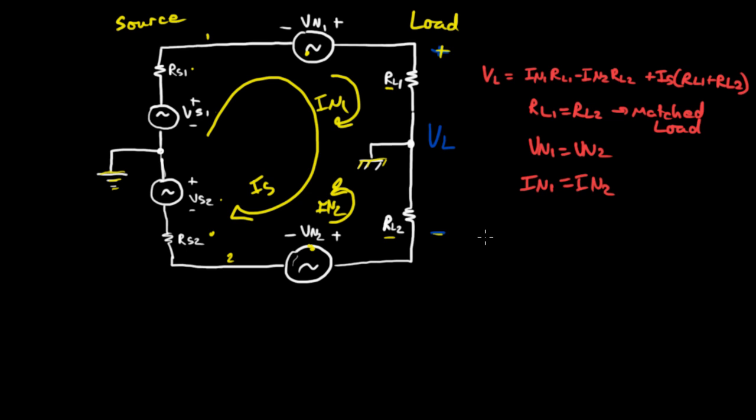So then this voltage at the load equation simplifies because these two terms go to 0, and we just have IS times RL1 plus RL2 equals IS times 2 RL. You can see that the noise term does not show up in the final result of the voltage measured at the load. So the system is balanced, and this is the power of balanced or differential signaling.